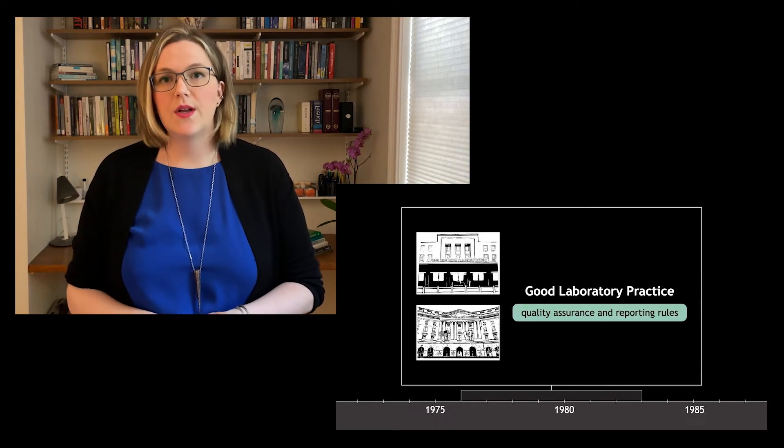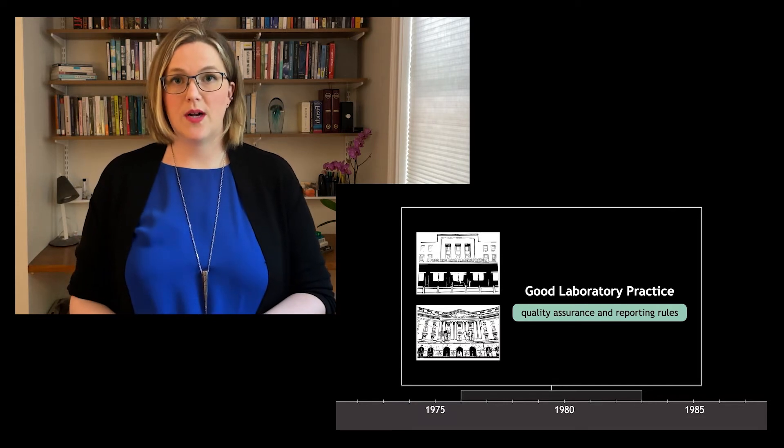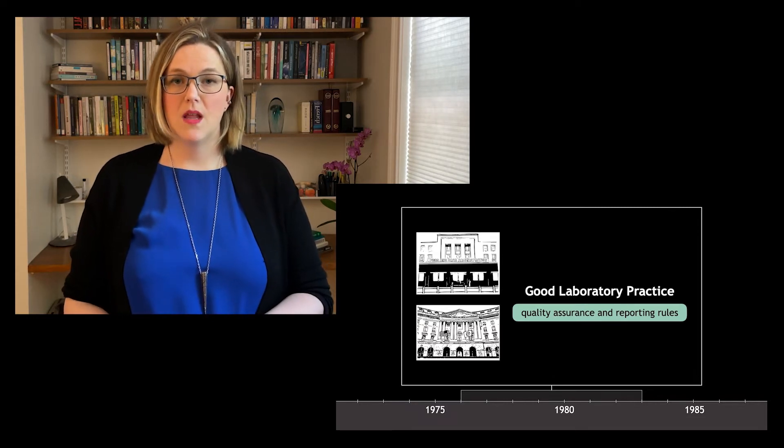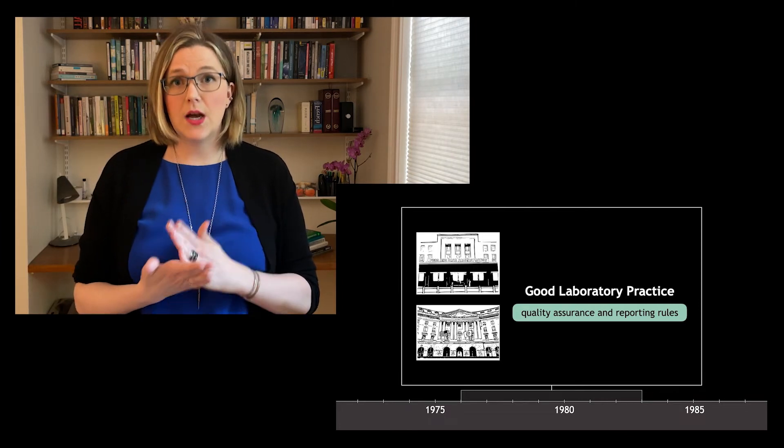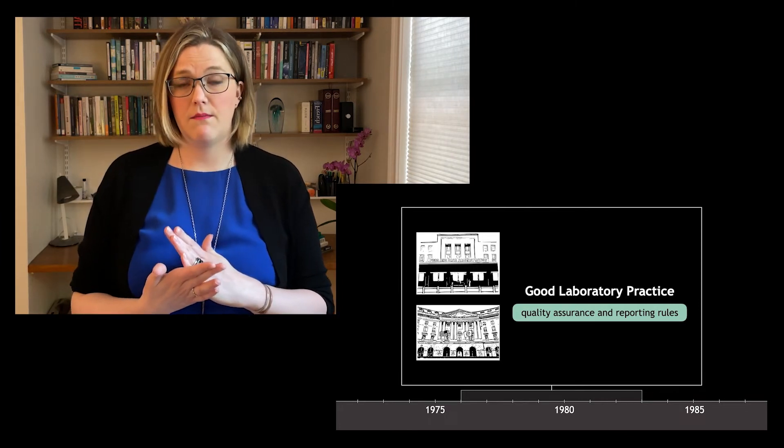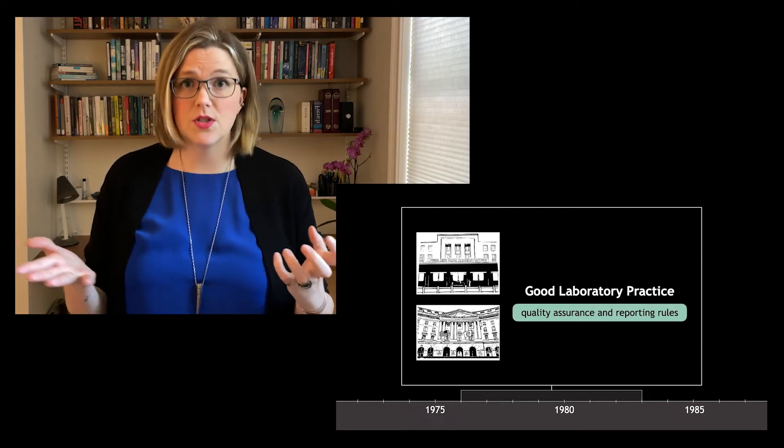So between 1976 and 1983, U.S. regulators formulated Good Laboratory Practice Rules, essentially a quality assurance and reporting system focused on standardization, documentation, and auditability—a common response to concerns about bias and fraud.